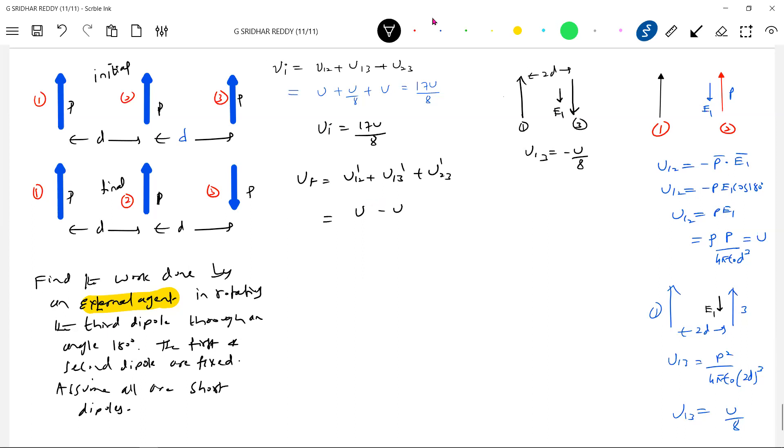And now there'll be change between one and three, how much it will be minus U by 8. U₂₃, U₂₃ will be minus U. Minus U by 8 it's come.